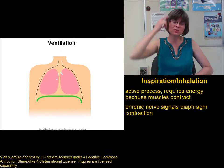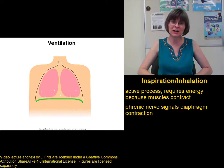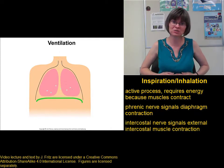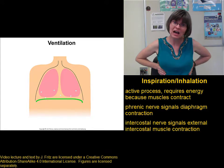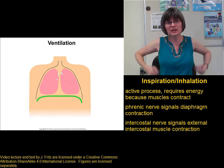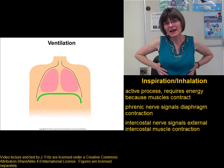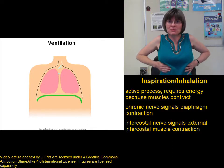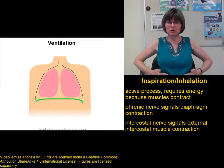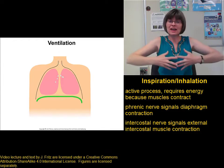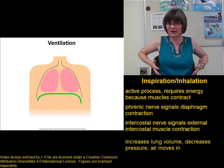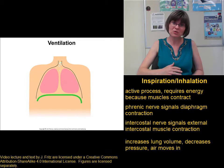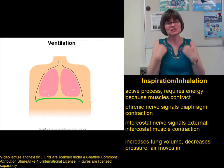At the same time, a signal travels down the intercostal nerves to the external intercostal muscles, which are found between the ribs. When the external intercostal muscles contract, they pull the ribs up and out, increasing the volume of the thoracic cavity and lowering the pressure further. When the pressure goes down, air flows into my lungs.